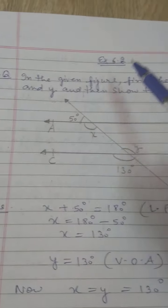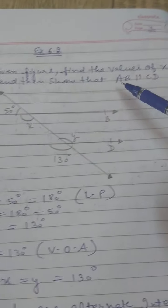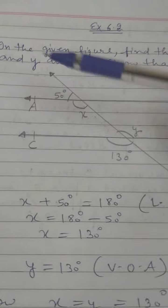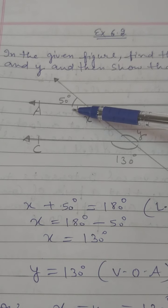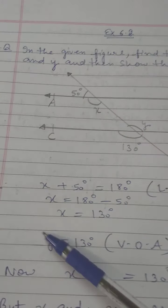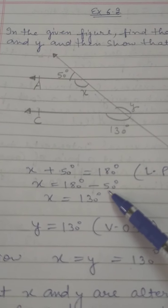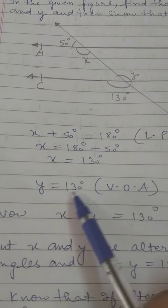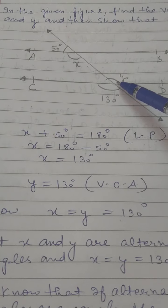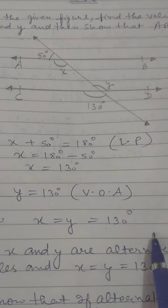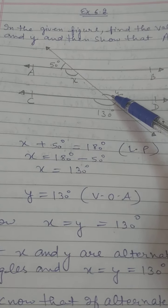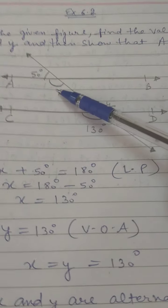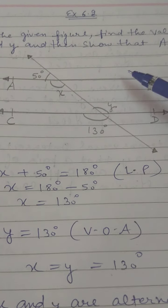Question number 1: In the given figure, find the values of X and Y and then show that AB is parallel to CD. Angle X and the angle of 50° are on a straight line, therefore X plus 50° equals 180°, so X equals 180° minus 50° equals 130°. Now Y equals 130° because these two angles are vertically opposite angles. Since angle X equals angle Y equals 130°, and these two angles are alternate interior angles, and we know that if alternate interior angles are equal then two lines are parallel, therefore AB is parallel to CD.